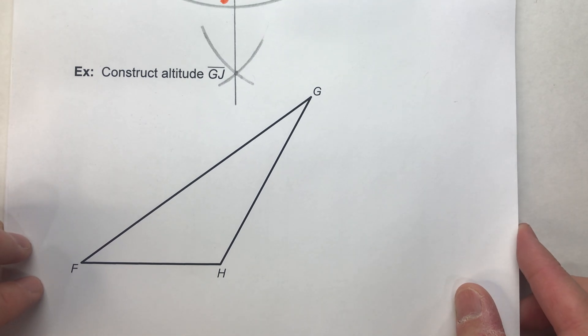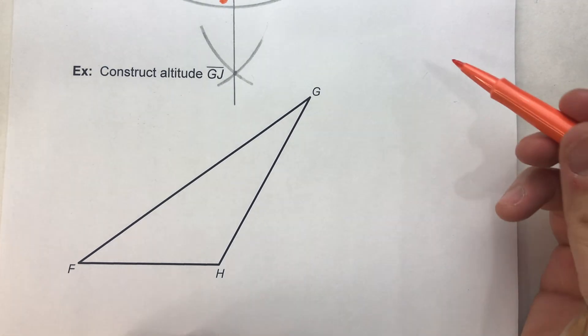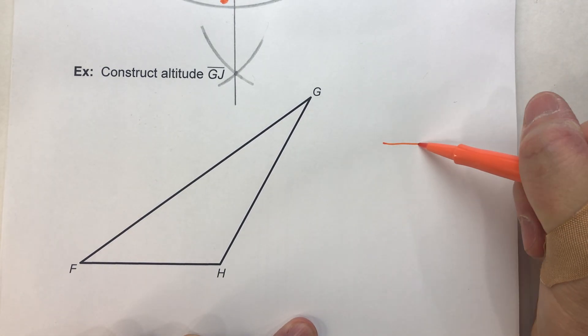This one says construct altitude GJ. So again, I'm going to do a little sketch so we can kind of picture what's going on here.